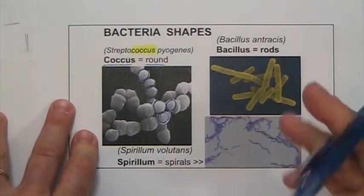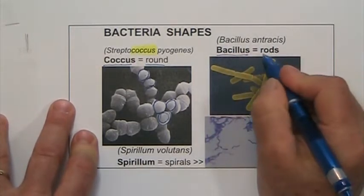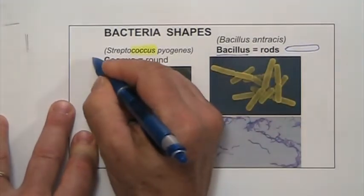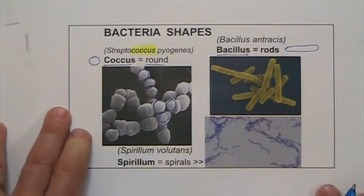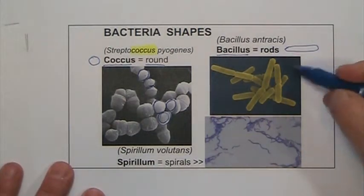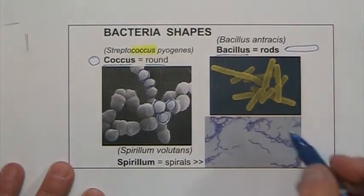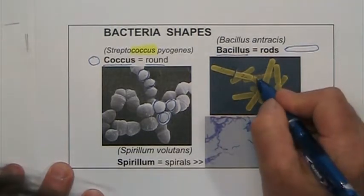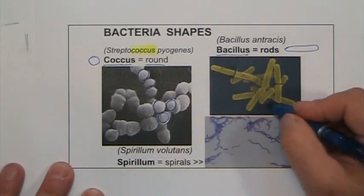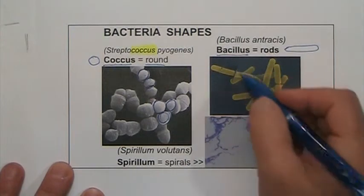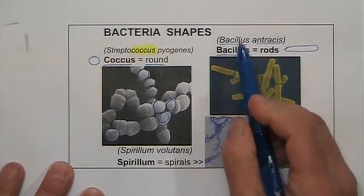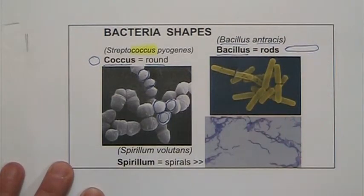The second shape is called bacillus — these are rods, like little rectangles. They also like to stick together. An example is Bacillus anthracis. Notice that the shape name is the same as the genus — the shape is used to describe the genus.